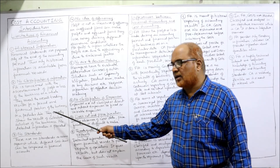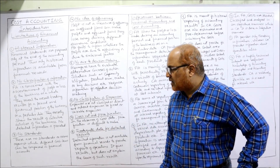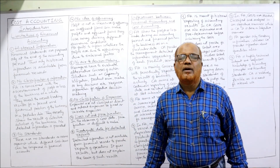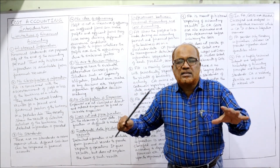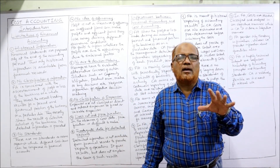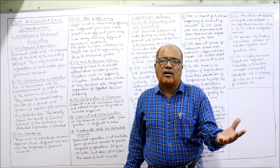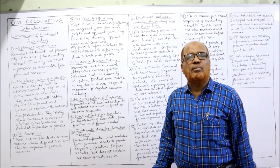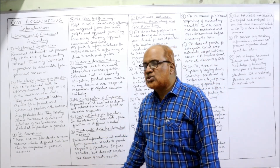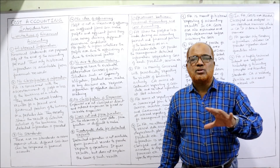Financial statements merely show the result of collective activities of the business. No detailed information is provided — only whether the business earned profit or incurred loss during the whole year. That's all; detailed information will not be provided by financial accounting.